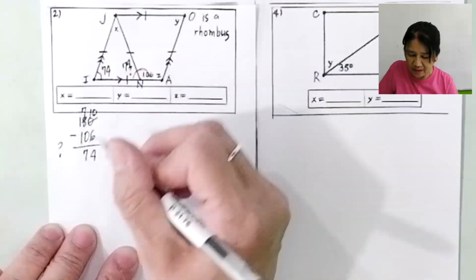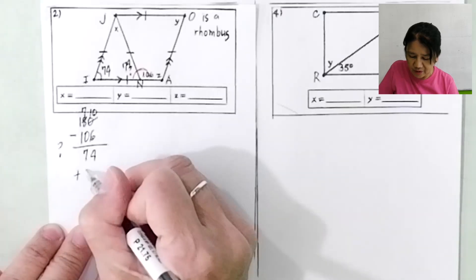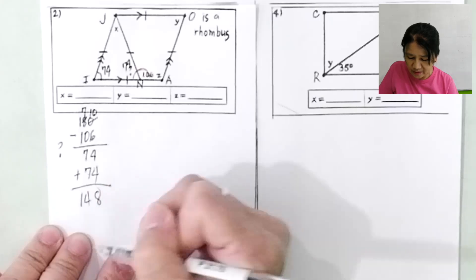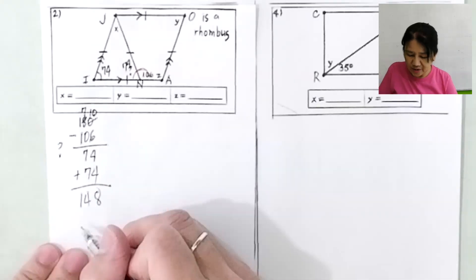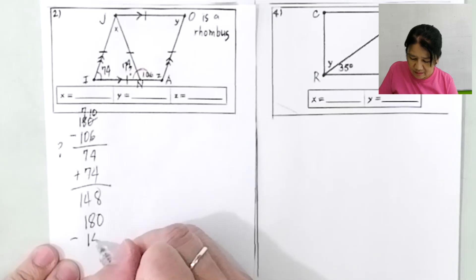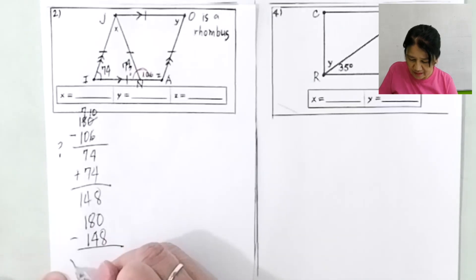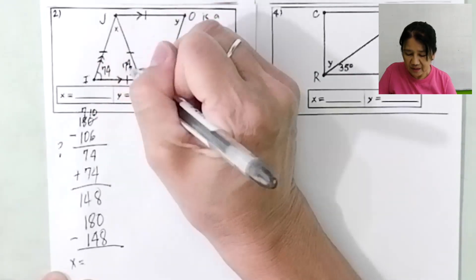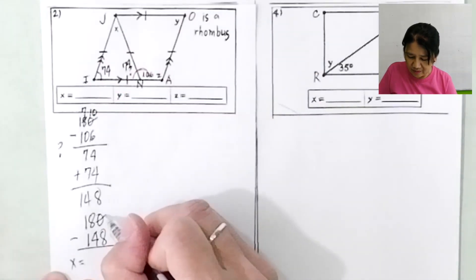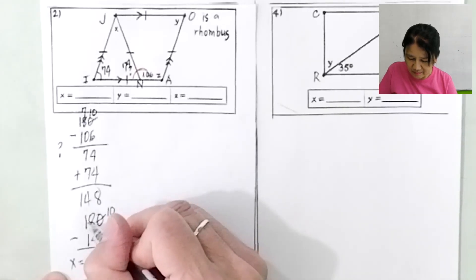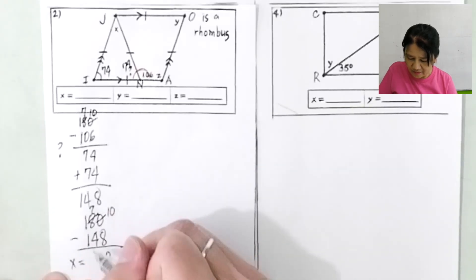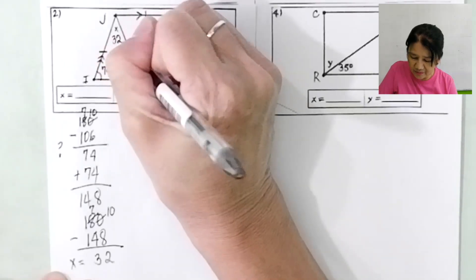We have this theorem in geometry that if two sides of a triangle are congruent, then the angles opposite them are congruent. So how do we solve for x now? We add these two, subtract from 180, we will get x. So 74 plus 74 is 148. Subtract from 180 to get x. Because we have a triangle here, the sum of the angles is 180. 10 minus 8 is 2, 7 minus 4 is 3. So x is now 32.